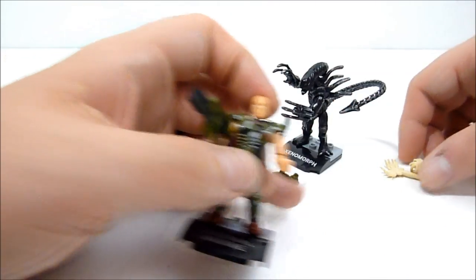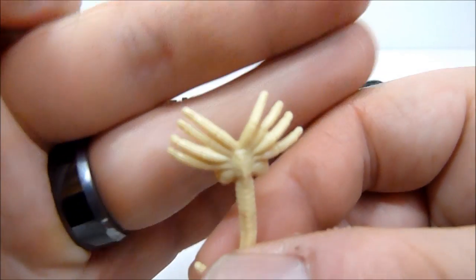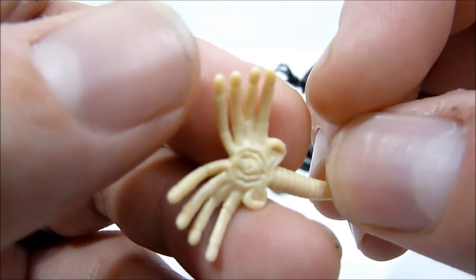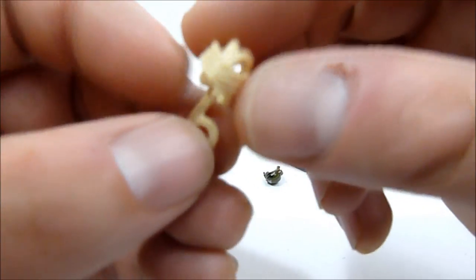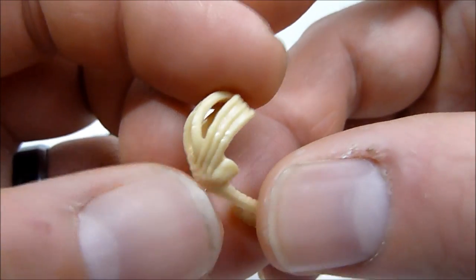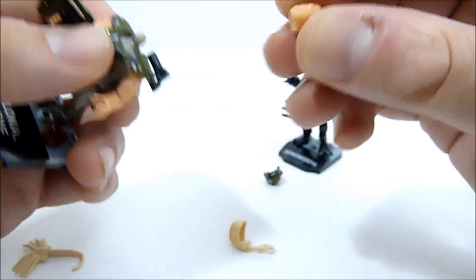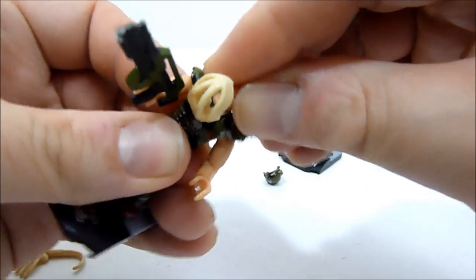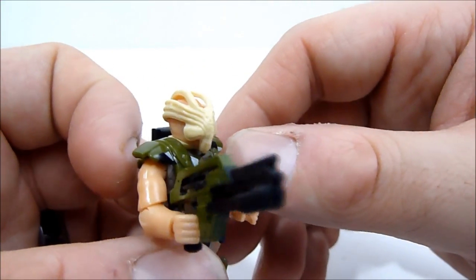All that said, the hat comes off and the xenomorph comes with two facehuggers. You get one with just open legs made of rubbery plastic so you can see the little gross organs and it can skitter like that. Then you get the closed one, which has the arms wrapped around a head shape and even the tail is in a loop.